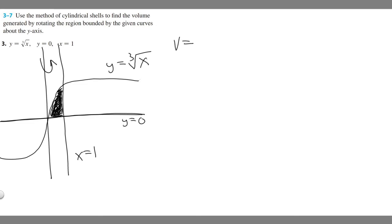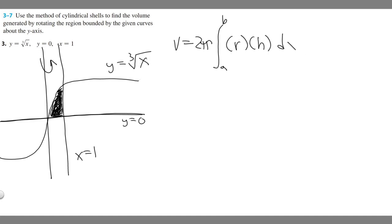When you use cylindrical shells, you use this formula: Volume equals two pi times the integral from a to b of r times h — radius times height — times dx or dy depending on which axis you're rotating around. If you're rotating around a vertical line, it's going to be dx. If you're rotating around a horizontal line, it's going to be dy.